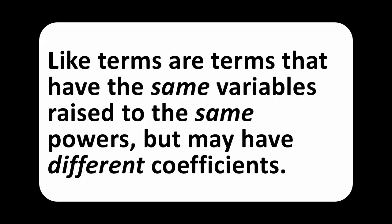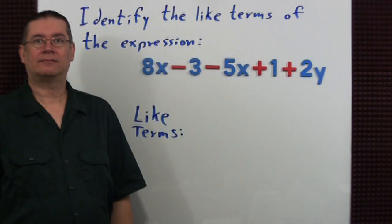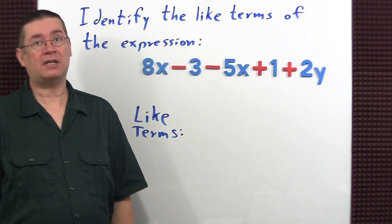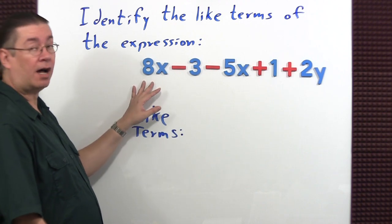same variables raised to the same powers, but may have different coefficients. Constants — numbers or symbols that represent specific values — are also considered to be like terms. For our first example, I want to identify the like terms of the